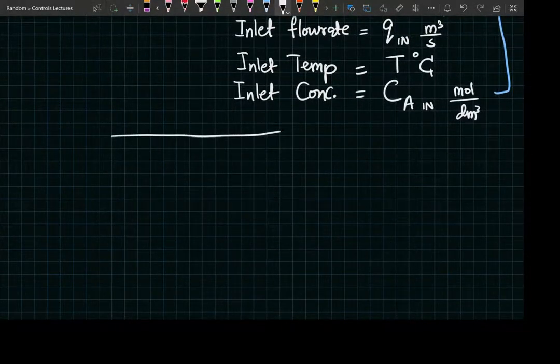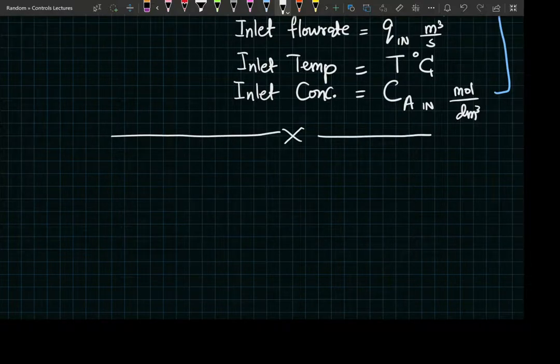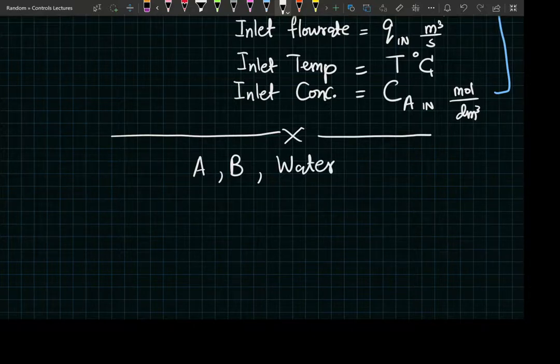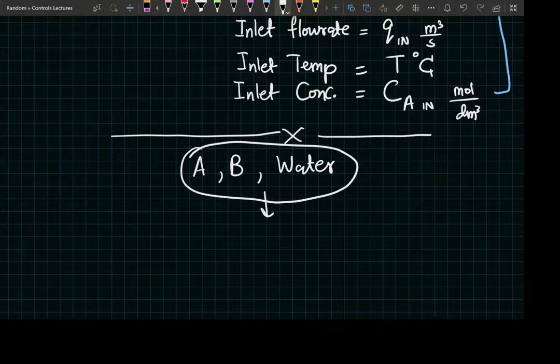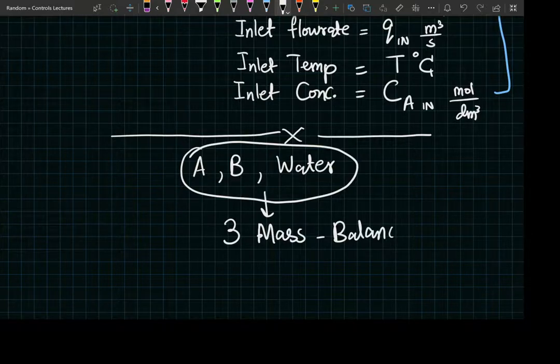Once you have the info, I'm just going to give you a brief map of what we're going to do next. We have three species in the system—A, B, and water. Since water is being used as a solvent, we can write a total of three mass balances.